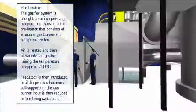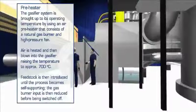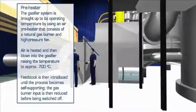Air is heated by the gas burner and blown into the base of the gasifier, raising its temperature to approximately 700 degrees Celsius. At this point, the feedstock is gradually introduced until the process becomes self-supporting. The gas burner input is then reduced before being finally switched off.